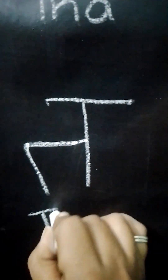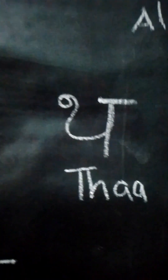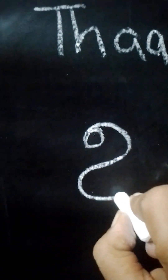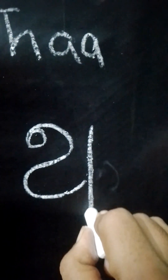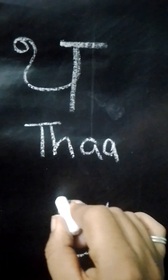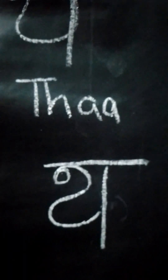This alphabet is known as Tha in Hindi. Now for the next alphabet, Tha. To write this alphabet, first draw a circle, then from the circle draw a semi-circle, and beside it draw a standing line. At the top, join it with a sleeping line.